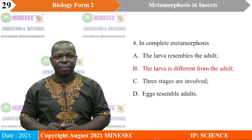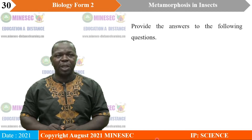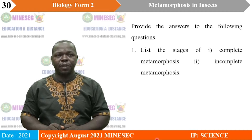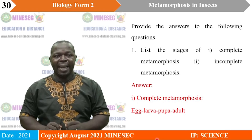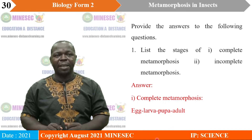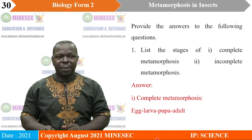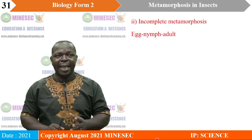Provide the answers to the following questions. List the stages of: sub one, complete metamorphosis; sub two, incomplete metamorphosis. Stages for complete metamorphosis include the egg, larva, pupa, and adult — four stages in complete metamorphosis. Stages for incomplete metamorphosis include egg, nymph, and adult — three stages for incomplete metamorphosis.